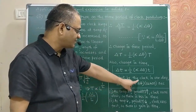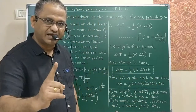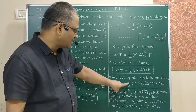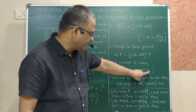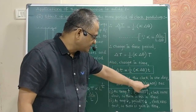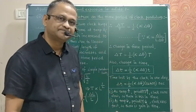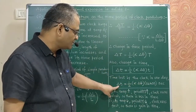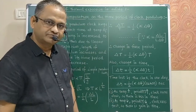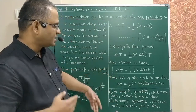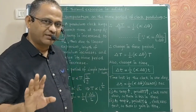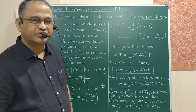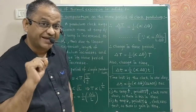So the time lost by the clock in one day is delta-T = (1/2) × alpha × delta-theta × 86,400 seconds. Given the values of alpha and change in temperature, we can calculate the change in time — the time lost or gained per day.